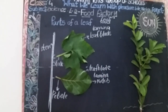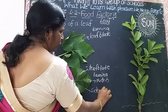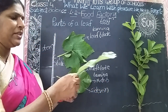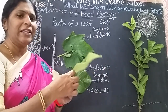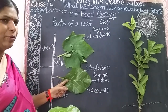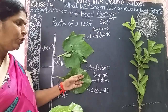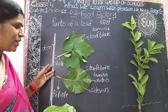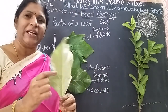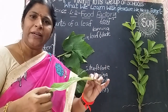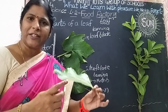What is the use of these veins? Veins give support to the leaf and also carry water from the stem to the leaf. Food is prepared in the leaves, and veins carry the food from the leaf to different parts of the plant. So the main function of veins is to give support to the leaf and carry water and food from leaves to other parts of the plant.